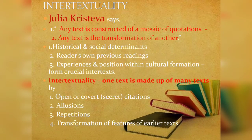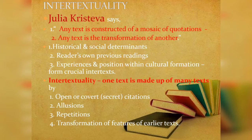Julia Kristeva says any text is constructed of a mosaic of quotations, and any text is a transformation of another. A literary text consists of a lot of sources taken from other texts, and it is a transformation of another text. In a literary text, the historical and social background of an author, as well as a reader's previous reading, his own experiences, and the position within his cultural formation — all these things are also crucial in the text, according to Julia Kristeva.